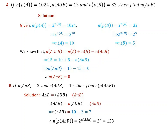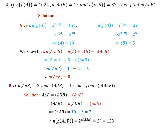Now using the formula: number of A union B equals number of A plus number of B minus number of A intersection B. Substituting: 15 equals 10 plus 5 minus number of A intersection B. Rearranging, number of A intersection B equals 15 minus 15, which equals 0. Therefore, number of A intersection B is 0.